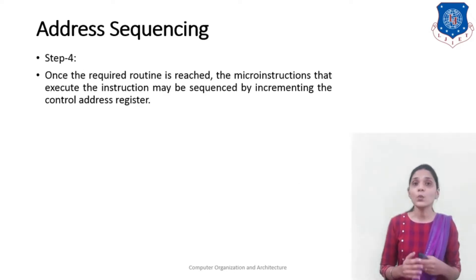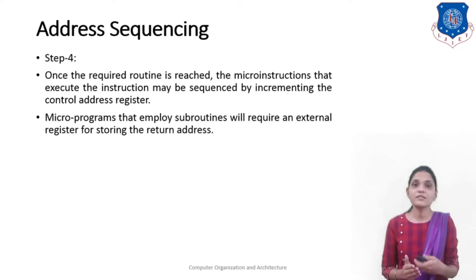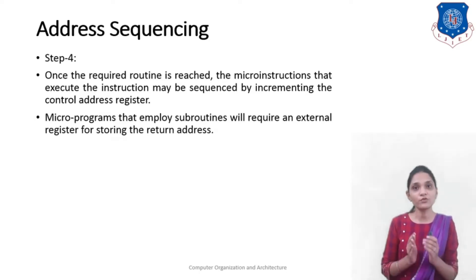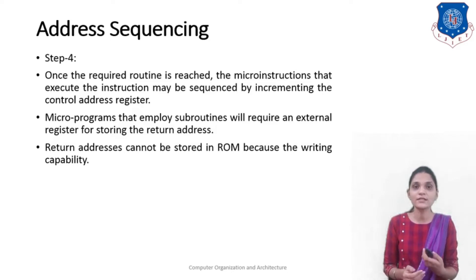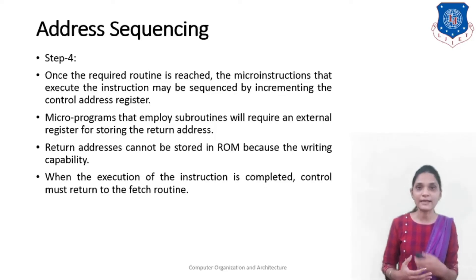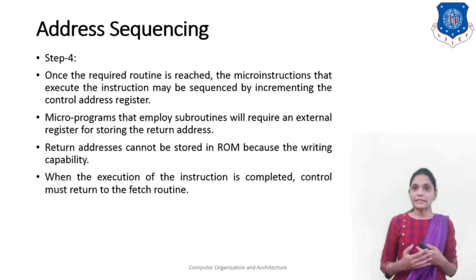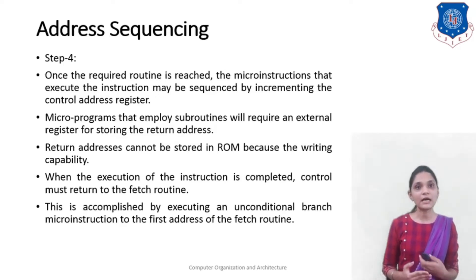In step 4, once the required routine is reached, the micro instructions may be sequenced by incrementing the control address register. Micro programs that employ subroutines require an external register for storing the return address, which cannot be stored in ROM since it is read-only memory. When execution of the instruction is completed, the control must return to the fetch routine, accomplished by executing an unconditional branch micro instruction to the first address of the fetch routine.